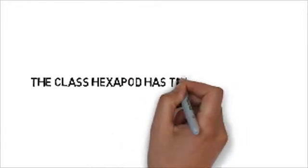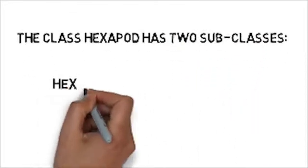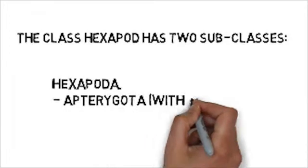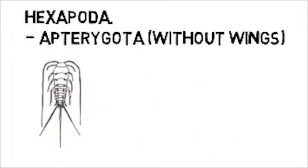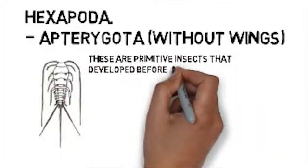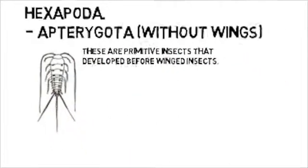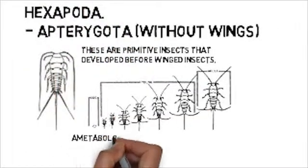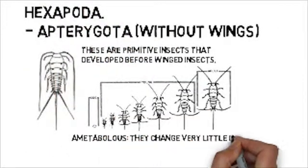The class hexapoda is further divided into subclasses based upon whether the insect has wings or not. Apterygota do not have wings. They are a very primitive insect that developed long before winged insects. These insects are ametabolous, meaning they have very little or no metamorphosis. The juveniles look identical to the adults throughout development.